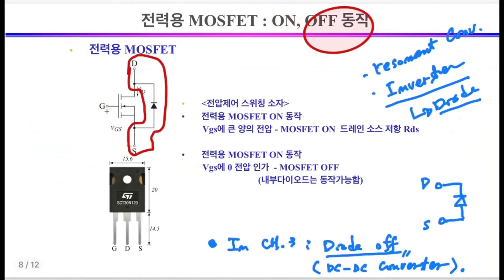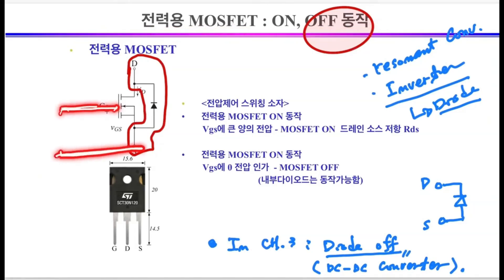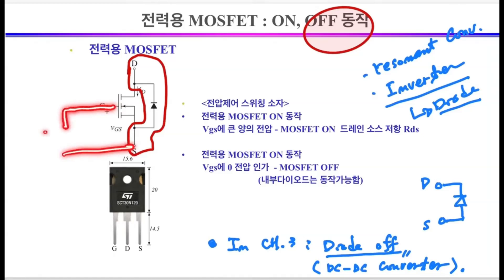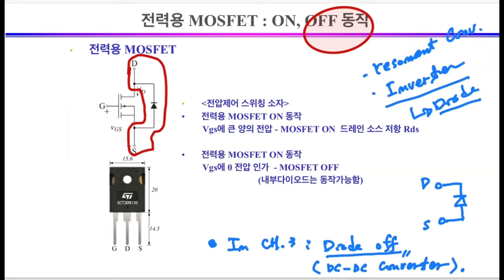Now let's look at the off operation of the MOSFET. To turn off the MOSFET, apply a voltage lower than the threshold voltage between the gate and source terminals. Since the threshold voltage of the MOSFET is approximately two to three volts, in most cases you can apply zero volts or a minus voltage — for example, minus five volts between the gate and source. At this time, the power MOSFET is turned off, so the ohmic resistance will be very large, and only a diode will exist between the drain and source.